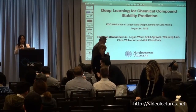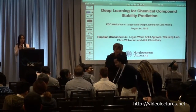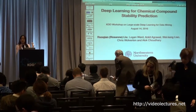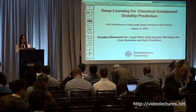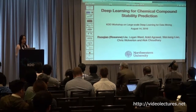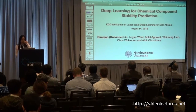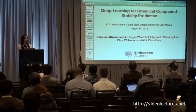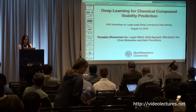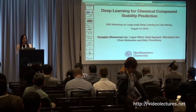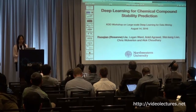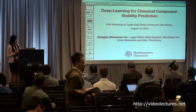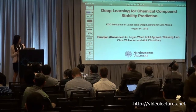Hi everybody, sorry for the delay because of the keynote and display issues. All my animations are gone, but once it's put online hopefully you can see them. So now we can only do this reduced version — no animation at all. I'll be talking about deep learning for chemical compound stability prediction.